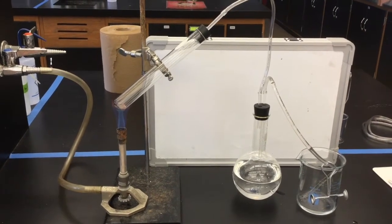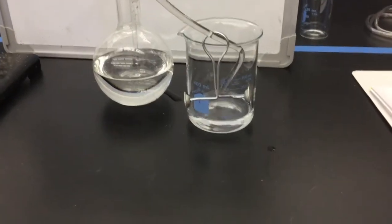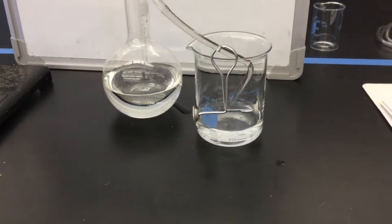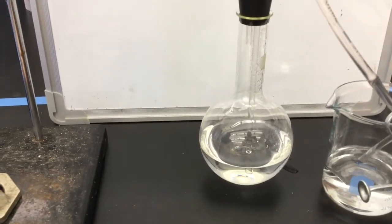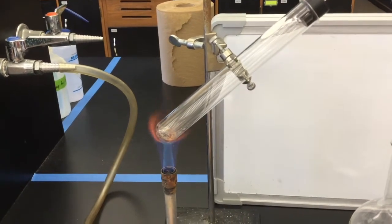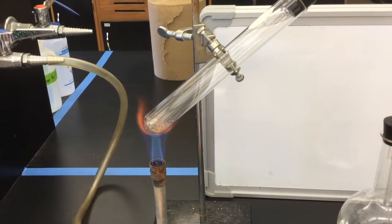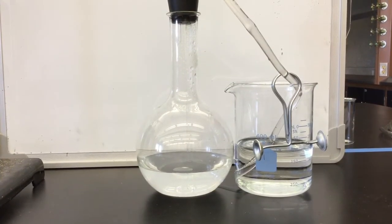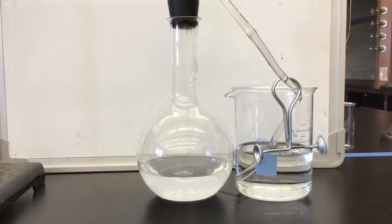Once you put the Bunsen burner underneath the test tube, you should notice that the system will begin working right away. You'll see water start collecting into the beaker, and this is coming from the water that's being pushed out of the Florence flask because of gas that is coming from the chemical reaction. We're going to continue with this reaction until no more water enters into the beaker. Once the water level stops rising, turn off the Bunsen burner and allow the reaction to come to room temperature.